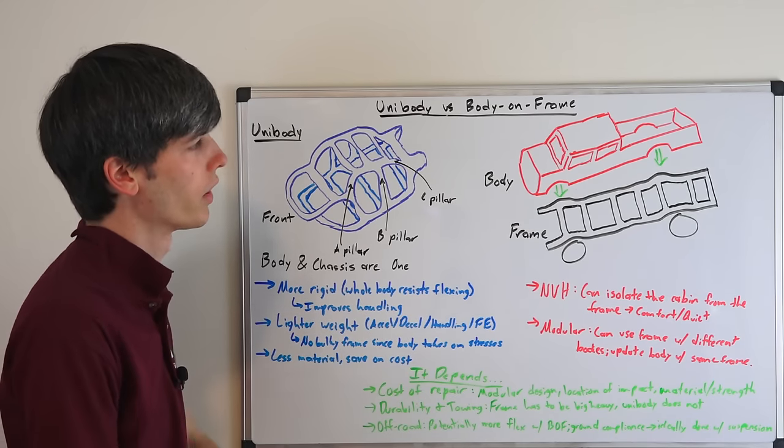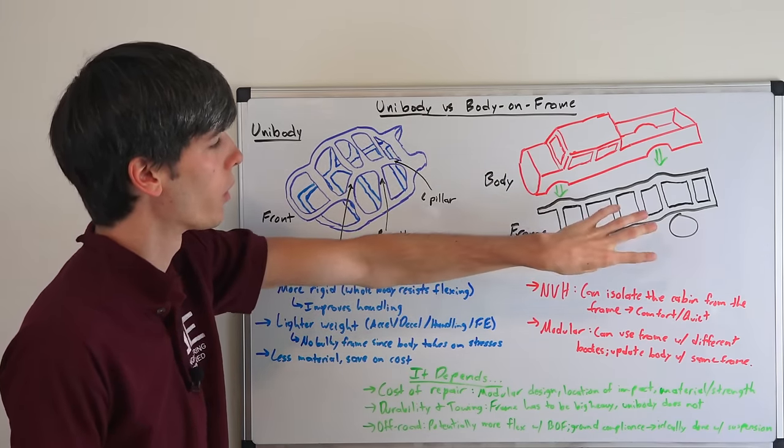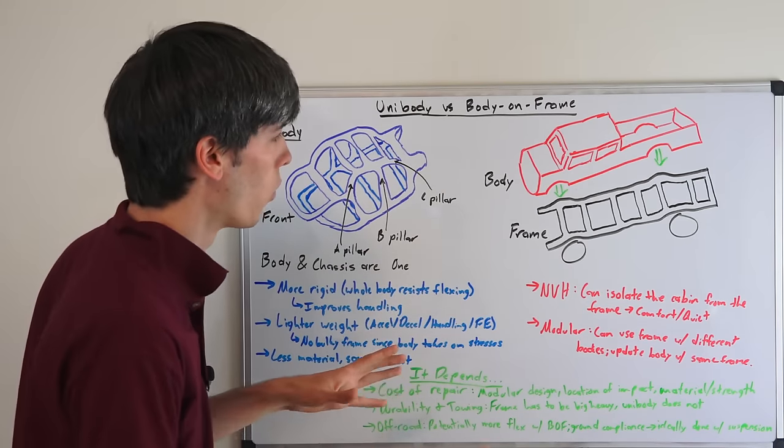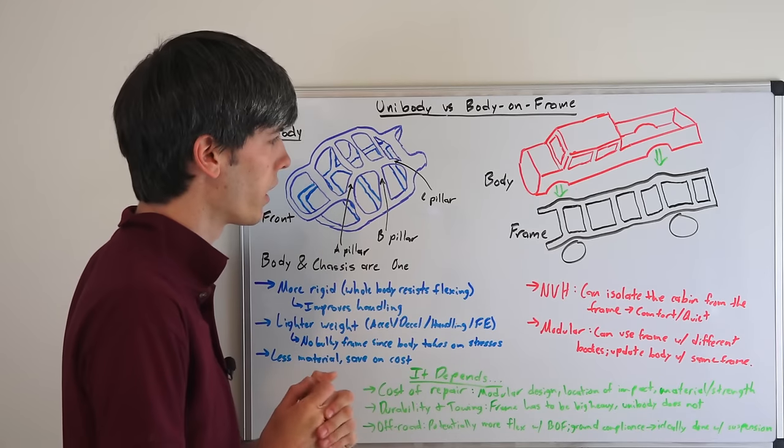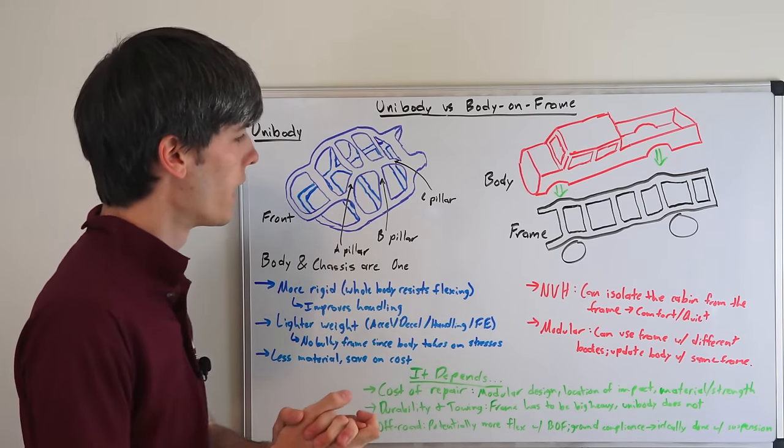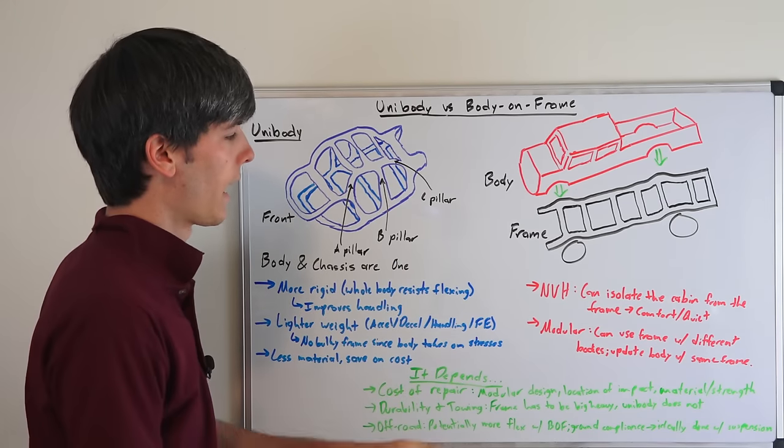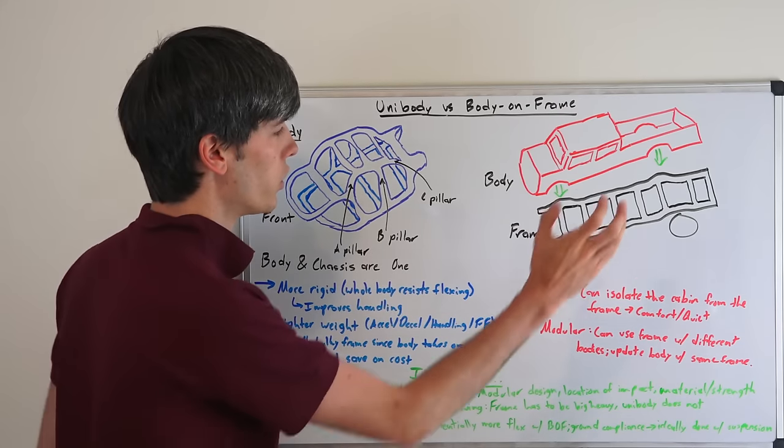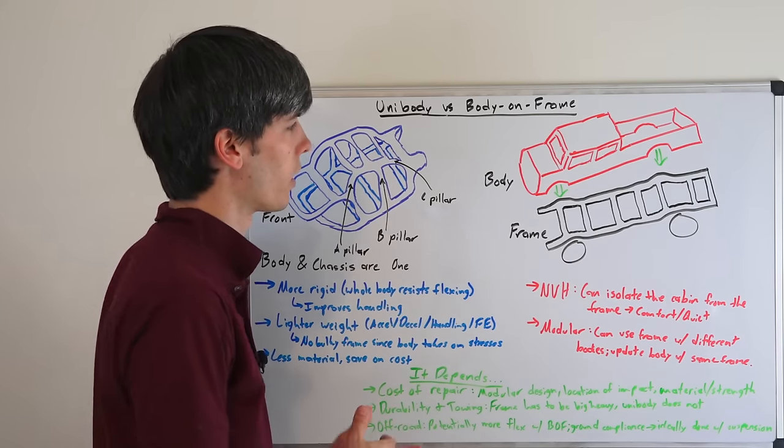Also it's modular, so you could have different bodies that you put on the same frame, and that can save cost if you just design one frame and then you have different bodies that you put on it, which used to be done a lot more commonly with SUVs and trucks and things like that. But things are tending to go towards unibody. And it's also, if you update the current body you can keep the same frame, so you can save in development costs with that.